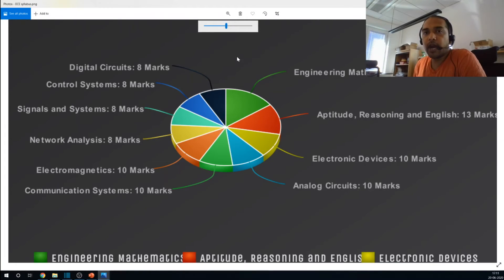Now, let's look at the marks for each of these subjects. From engineering mathematics, you have 15 marks that appears each year. From aptitude reasoning, you have 13 marks. In electronic devices, you get 10 marks worth of questions. Analog circuits, again the same. Communication systems, again the same. Electromagnetics, again the same. So, the core subjects which are electromagnetics, communication systems, electronic devices and analog circuits appear 10 marks each in general in the gate exam.